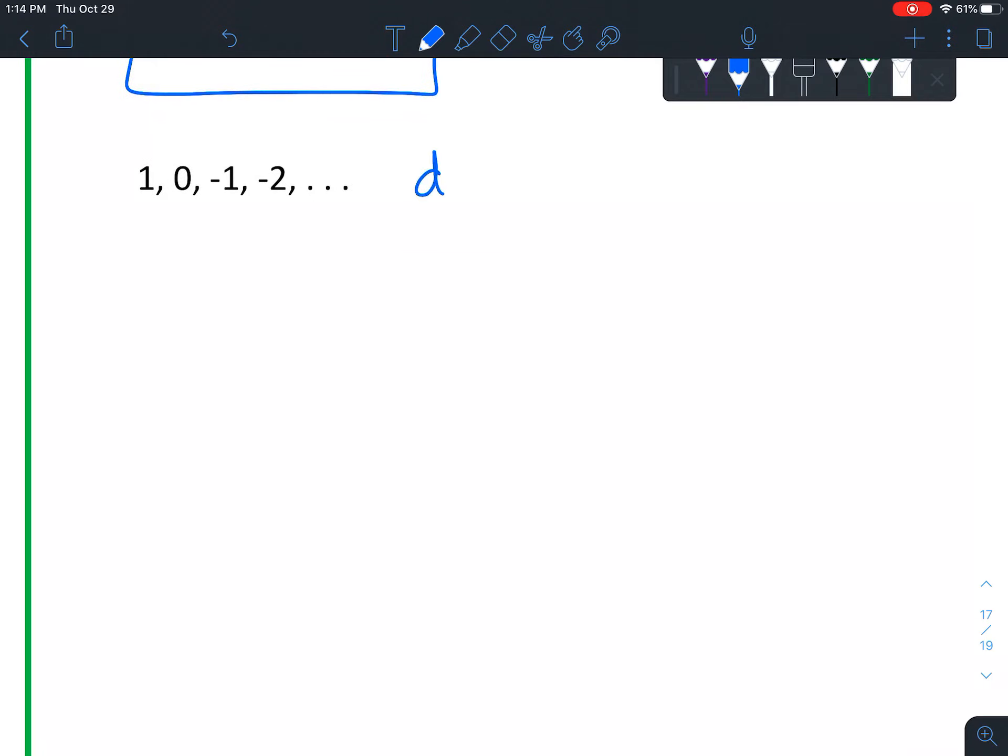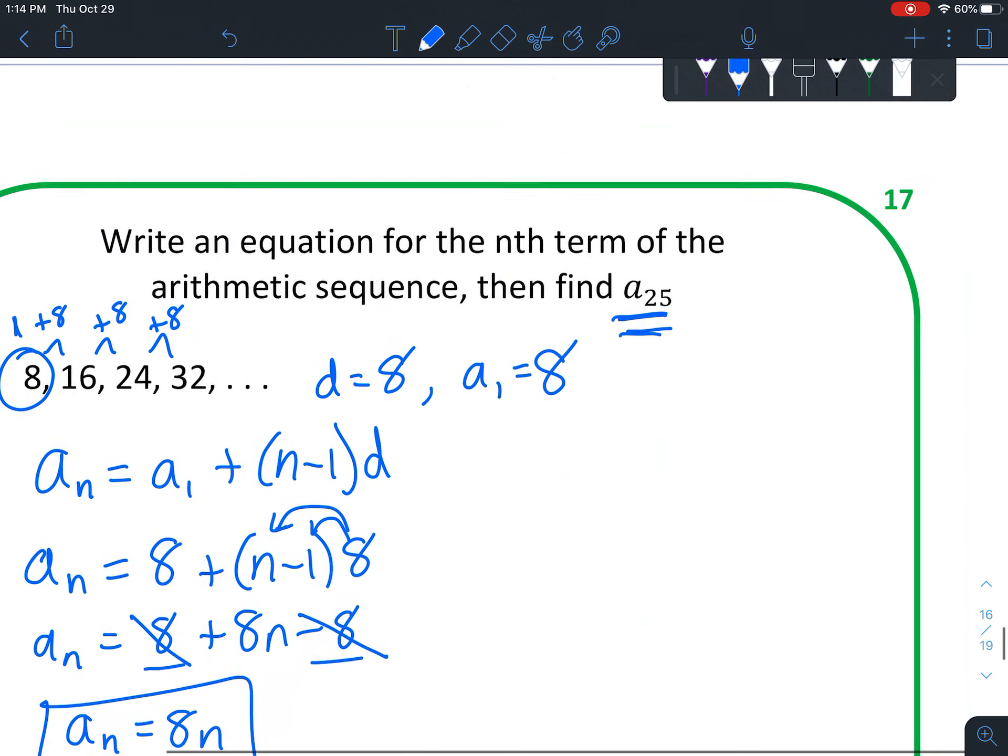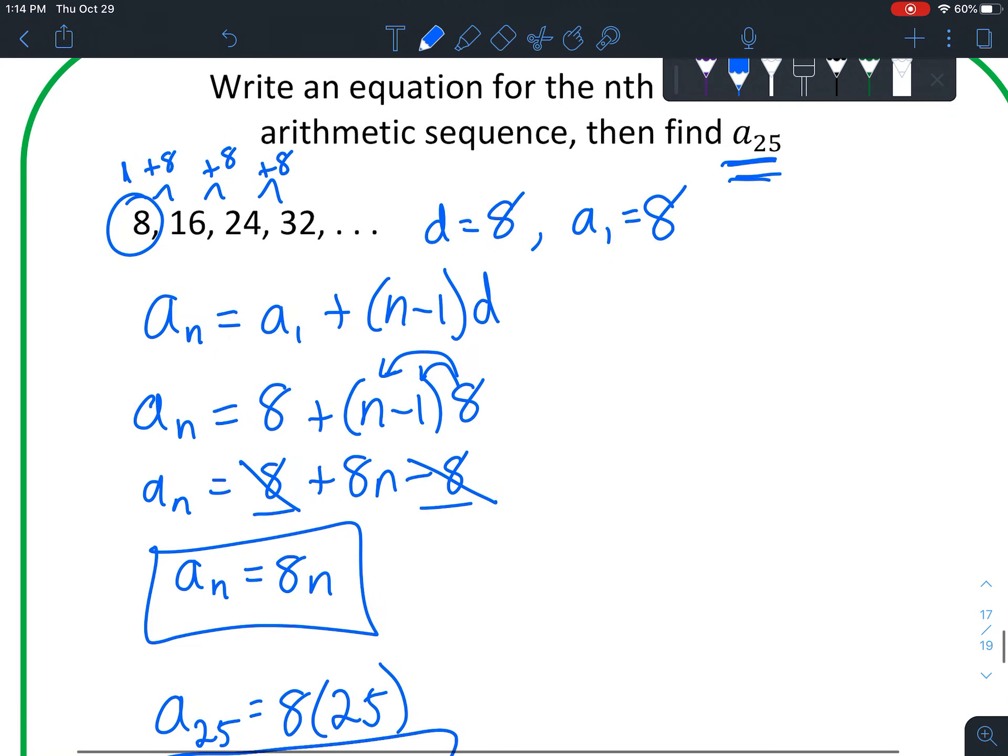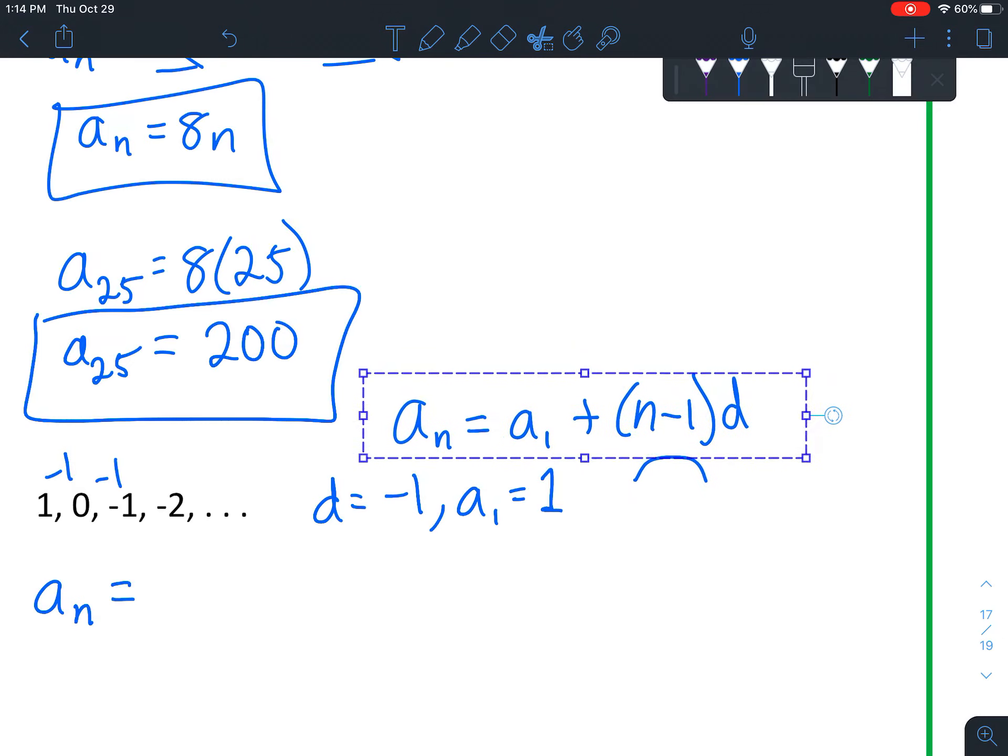All right, last problem. D equals, it looks like we are getting smaller, and we're subtracting 1 every time. So d equals negative 1. And a sub 1 equals 1. There's a lot of 1s there. It'll be interesting to see what happens. A sub n equals. So we're plugging into this formula. Maybe I'll bring it down. That's what we have right in front of us.